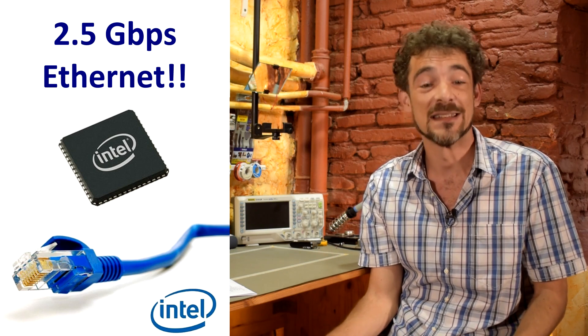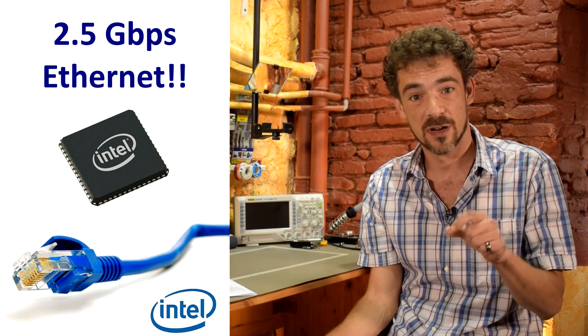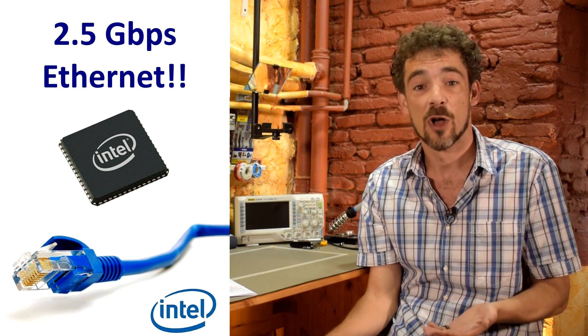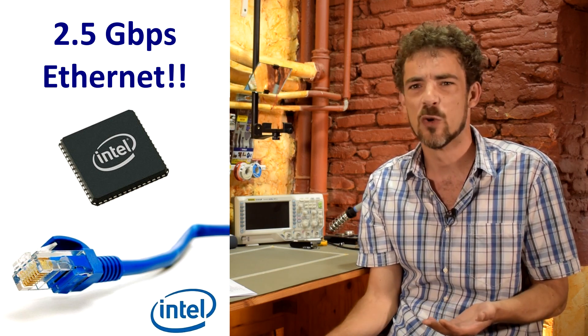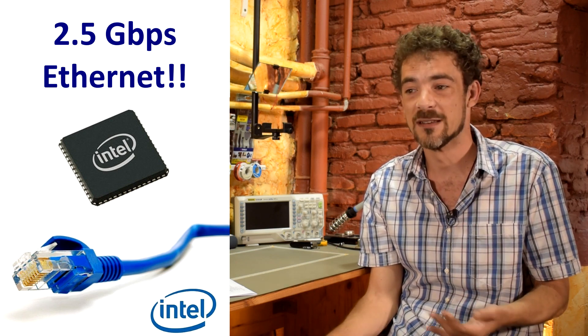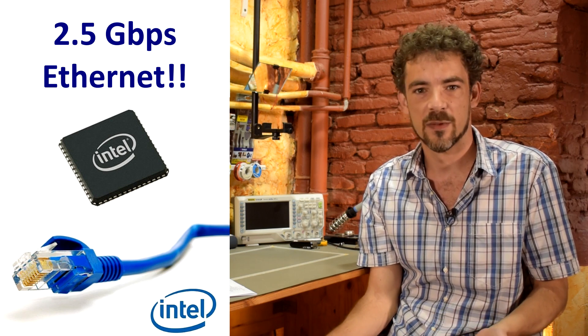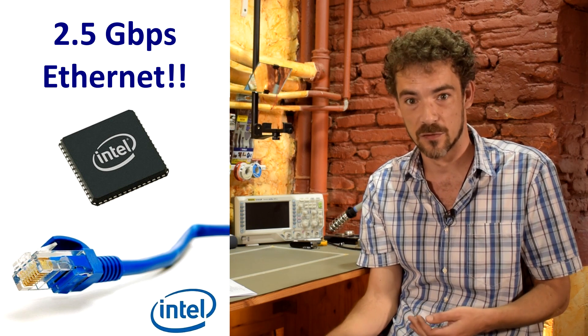Well, never fear, because 2.5 gigabit per second ethernet is now here. Intel has released a little ethernet controller chip not so long ago. It's called the i-225-V or dash-LE or something. Anyway, it's the i-225. It's a little ethernet controller chip and it's already made its way into high-end motherboards and also it's already available in certain gaming laptops, for example.